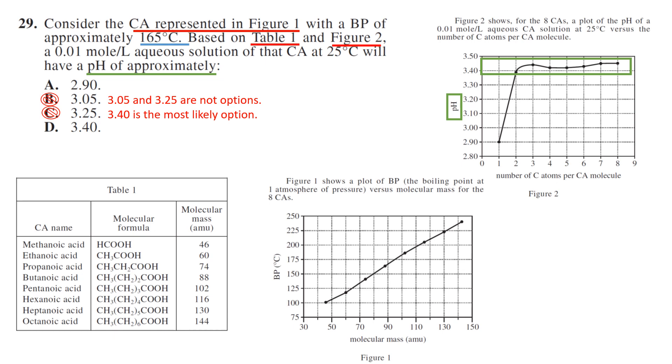Let's work it out though. So we're going to start and go through the process. It has a boiling point of approximately 165. So that's this spot right here. That means it has a molecular mass just below 90, which would put it here at butonic acid 88. So butonic acid 88 has how many carbon atoms? Four. So that means it's going to be at around 3.4, D.